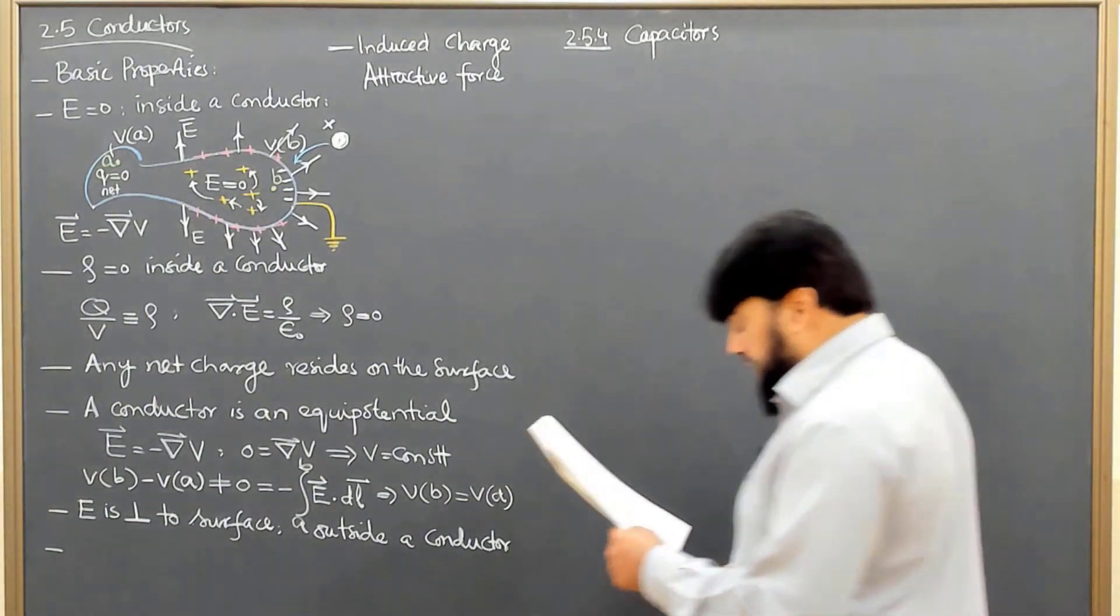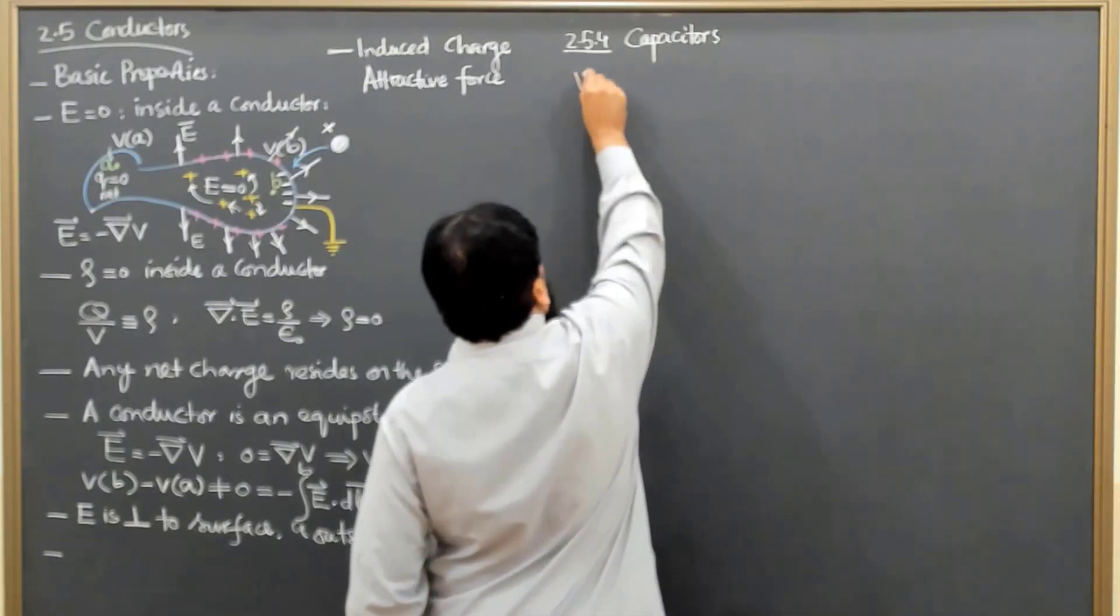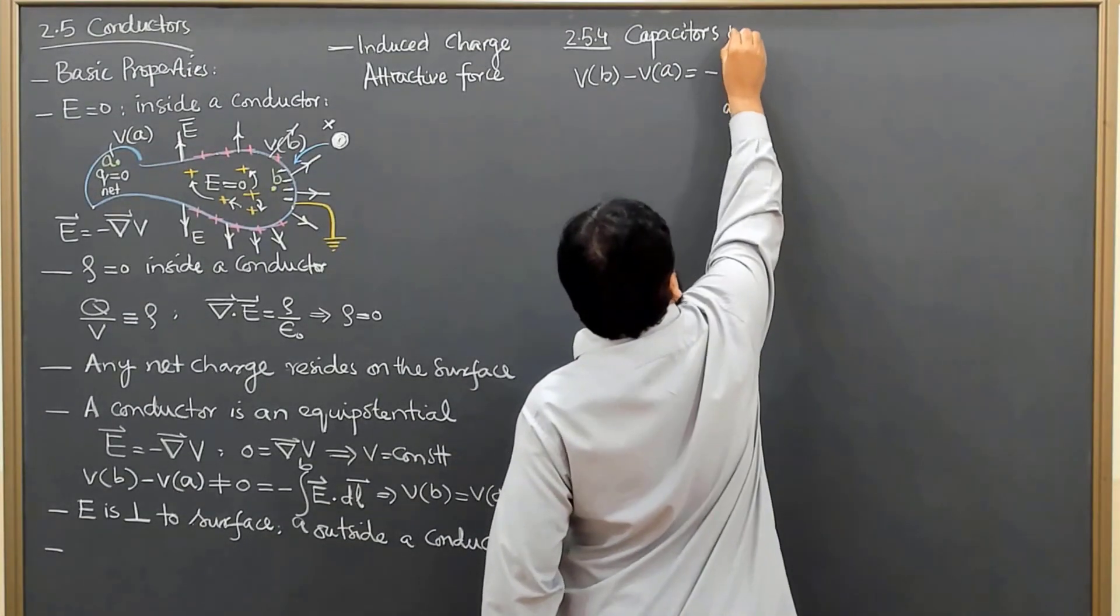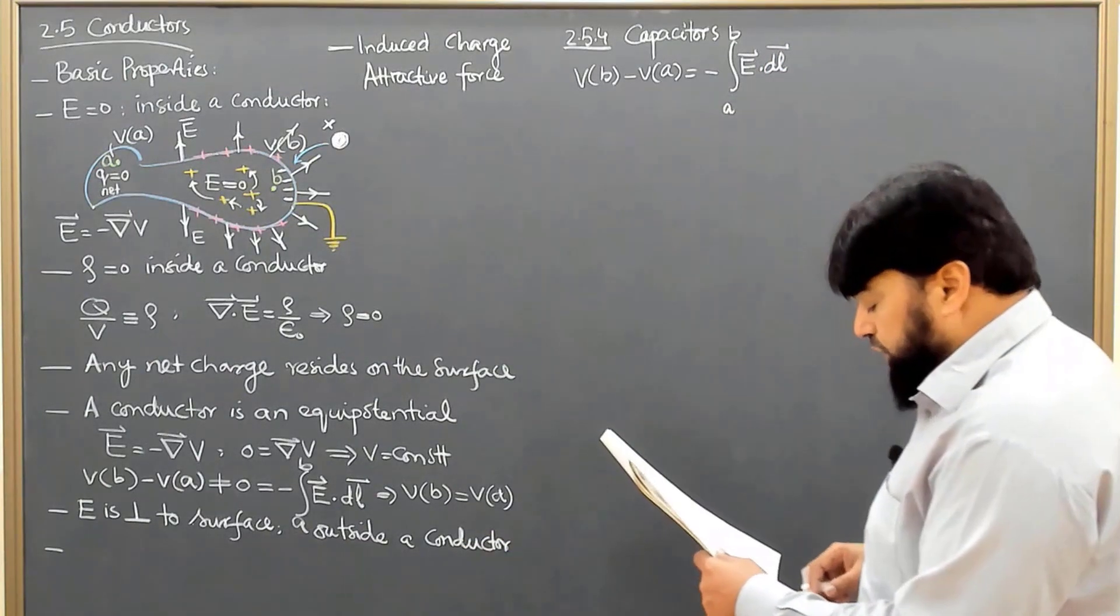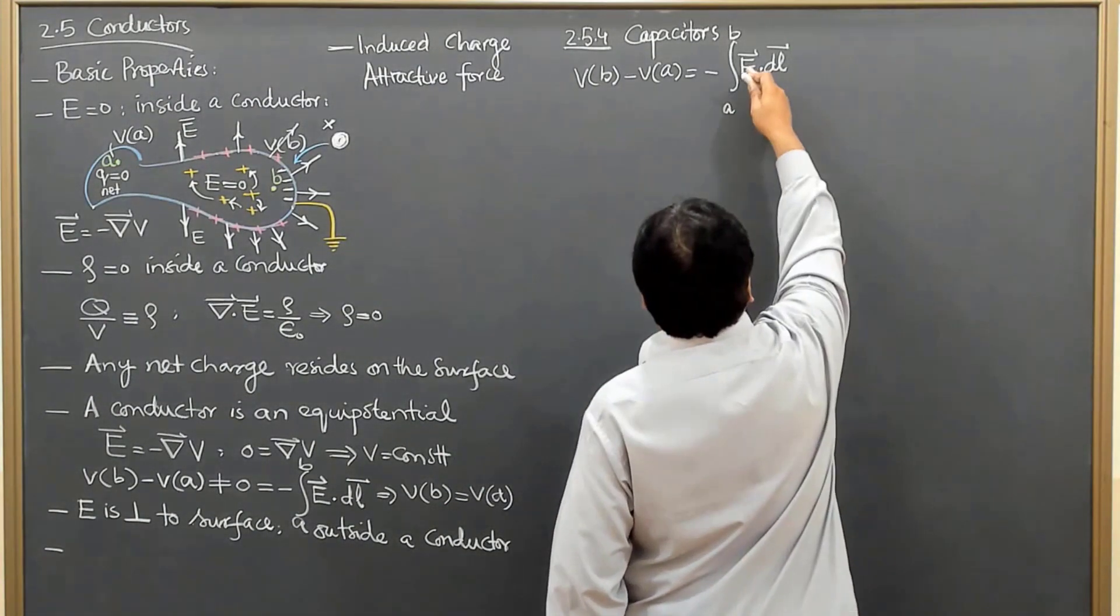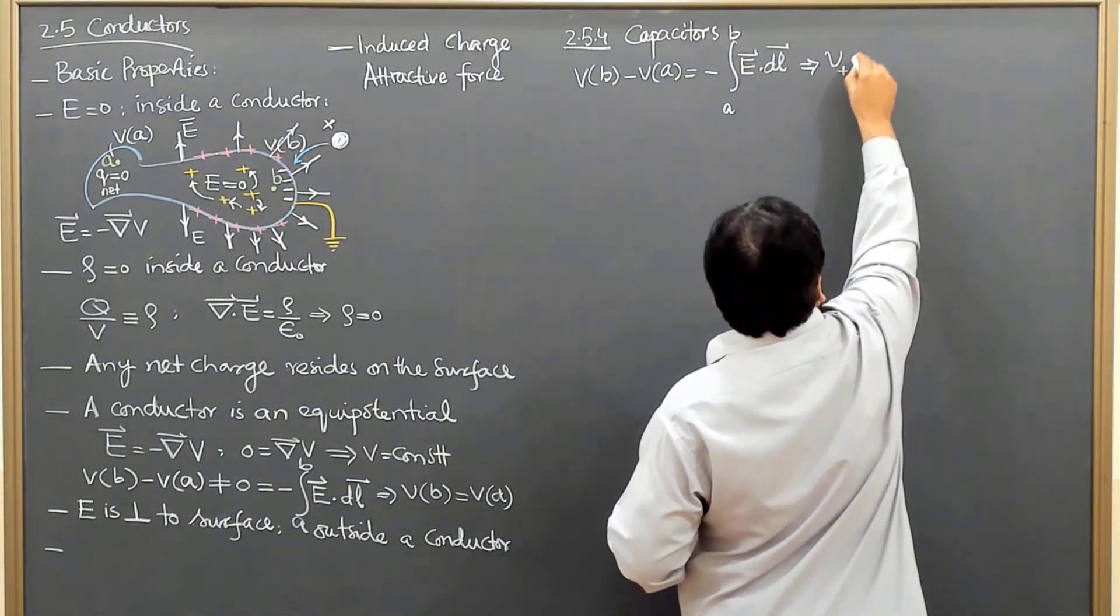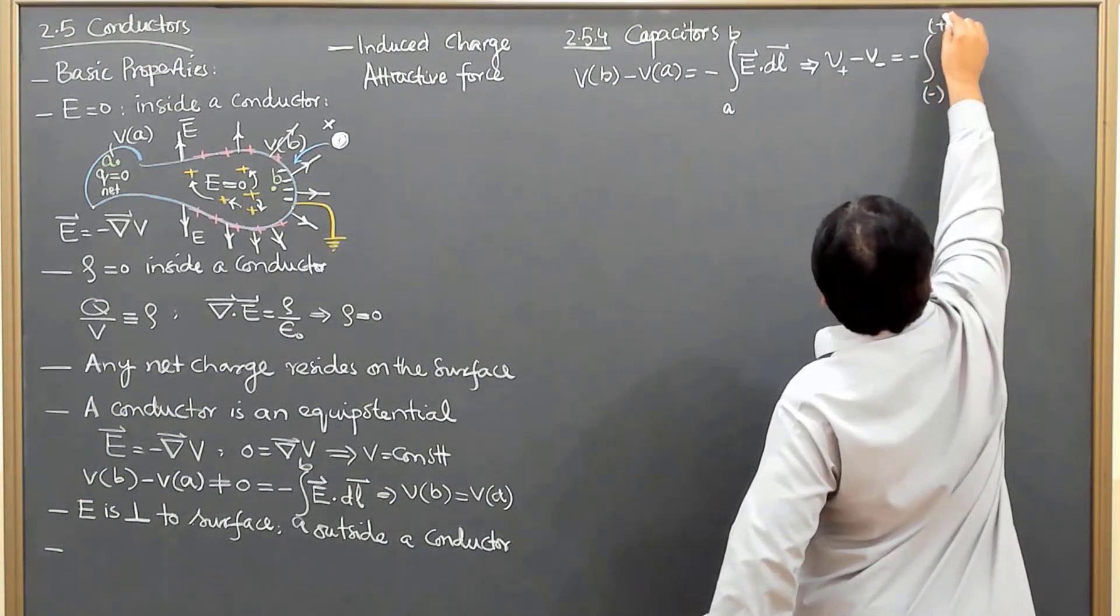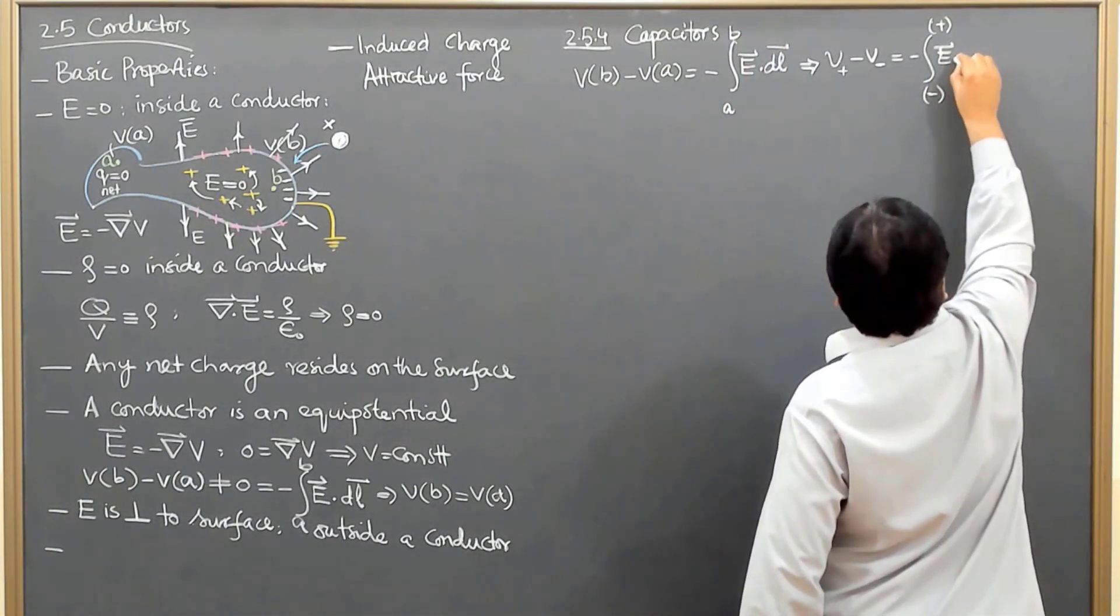For a capacitor, we have a basic relation: VB minus VA equals minus integral from A to B of E dot dL. This is the potential of one plate and the potential of the other. If I write V plus minus V minus on the other plate, this is minus integral from minus to plus, where point A is in one plate and point B is in the other plate.